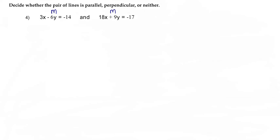Let's talk about slope and the similarities and differences that are going to make them the type of lines that they are. If the two slopes in these two equations are both the exact same, then that means they are going to run parallel — meaning on the graph, they're going to look like that.